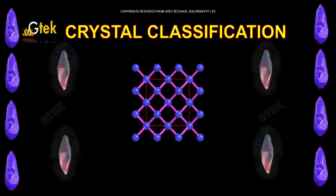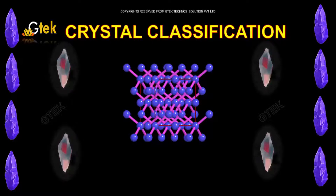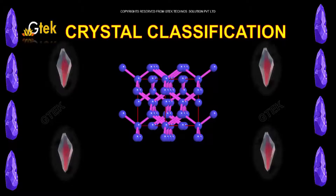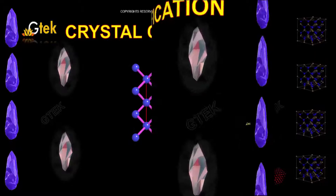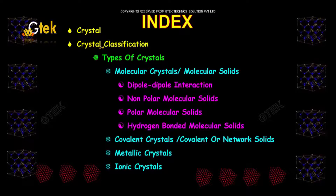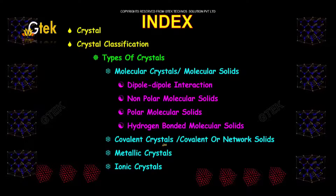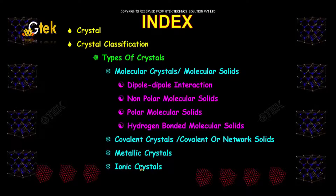Here is the crystal classification and its details. We are going to discuss crystals and their classification — the types of crystals: molecular crystals, covalent crystals, metallic crystals, and finally ionic crystals.